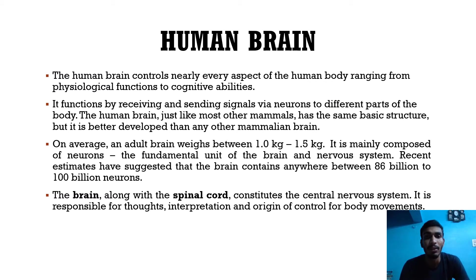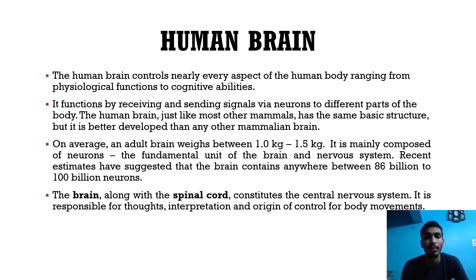The human brain controls nearly every aspect of the human body, ranging from physiological functions to cognitive abilities. It functions by receiving and sending signals via neurons to different parts of the body. Just like most other mammals, it has the same basic structure but is better developed than any other mammalian brain. On average, an adult brain weighs between 1.0 kg to 1.5 kg.